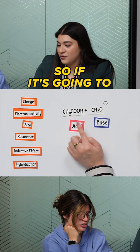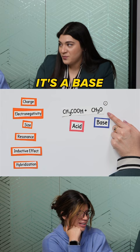This one, I know it's a base because it doesn't have a hydrogen to give. It wants to accept a proton. So that's why bases tend to be negative. Acids either have a proton or are positively charged.